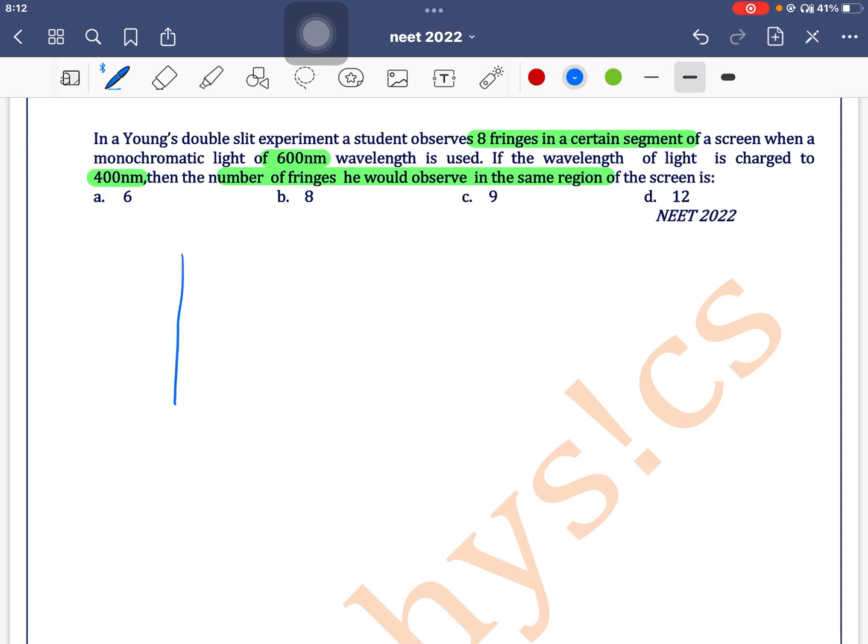It is given that in this particular segment a student is observing 8 fringes when light of wavelength 600 nanometer is used. What is the number of fringes you observed if wavelength is changed to 400 nanometer?